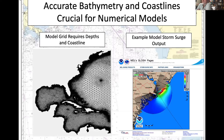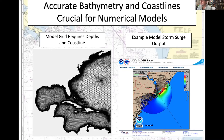Numerical models are used for many purposes and need accurate bathymetry and coastlines to forecast storm surges, currents, and more. A model grid is shown where the grid conforms to the coastline and depths are set for each grid point. An example of a NOAA storm surge forecast illustrates how this model relies on accurate coastline and bathymetry data obtained through hydrographic surveys.